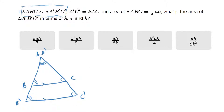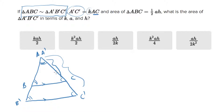One of the other things they tell you is A'C', which is the big side — the long side, the right side of the bigger triangle — is equal to K times the right side of the smaller triangle. So another way of thinking about that is: you take some physical feature of the small triangle, multiply it by K, and you'll get that feature of the larger triangle. That's a property of similar triangles.